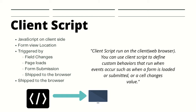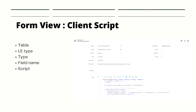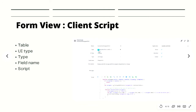Now let's take a look at the form view. On the right side you can see the form view of the client script. This runs on the Configuration Item table, which is where we specify the table name — this is where we specify on which table it will execute.